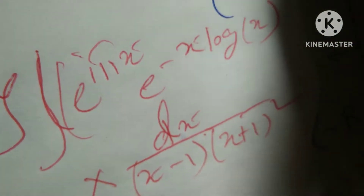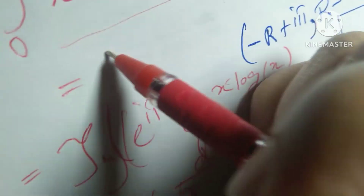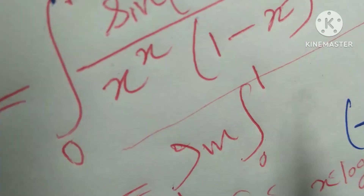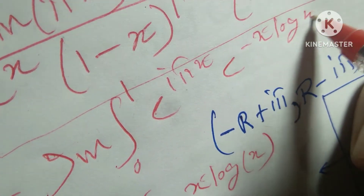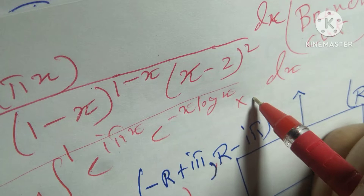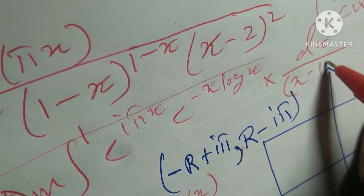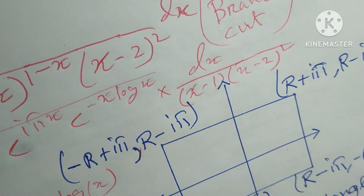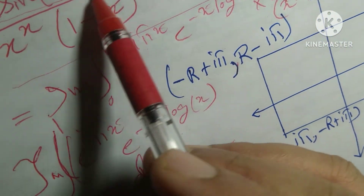Because sin(πx) can be written as the imaginary part of e to the power (iπx). So this becomes the imaginary part of the integral from 0 to 1 of e to the power (iπx) · e to the power (−x log x) dx divided by (x − 1)(x − 2)². I apply the substitution formula.